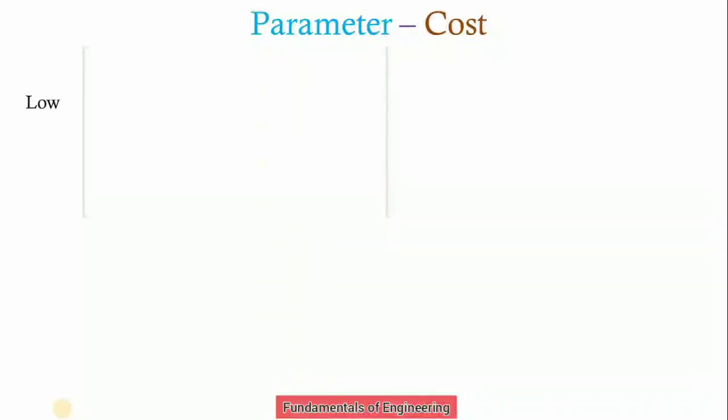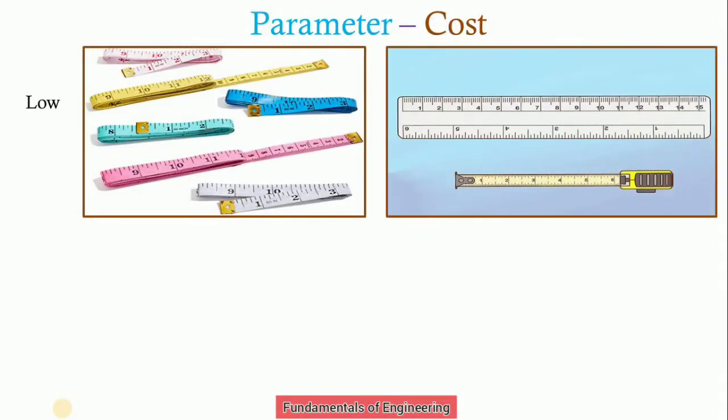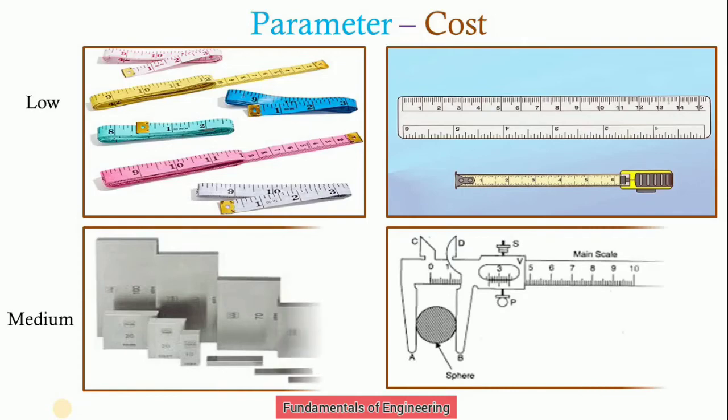If we consider the cost, line standard has low cost which can be easily available and we can use this more number of times. As we have to harden the end faces of the end standard, the cost of end standard materials are higher. And we have to take precautions while manufacturing these end standard instruments that the scales are properly marked and there is no zero error present.